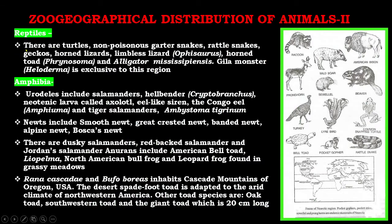Reptiles include turtles, non-poisonous garter snakes, rattlesnakes, Eumeces, horned lizards, limbless lizard Ophisaurus, horned toads, alligators, and Heloderma. For amphibia, urodeles include salamanders, hellbenders, Cryptobranchus, Necturus, neotenic larvae known as axolotl, eel-like siren, the Congo eel, and the tiger salamander.